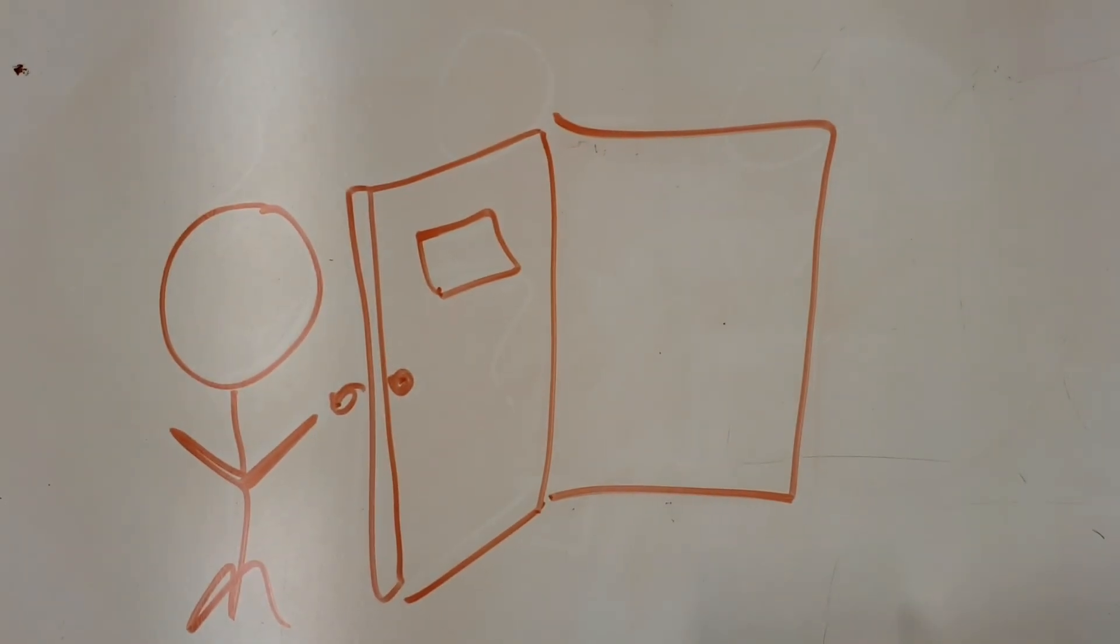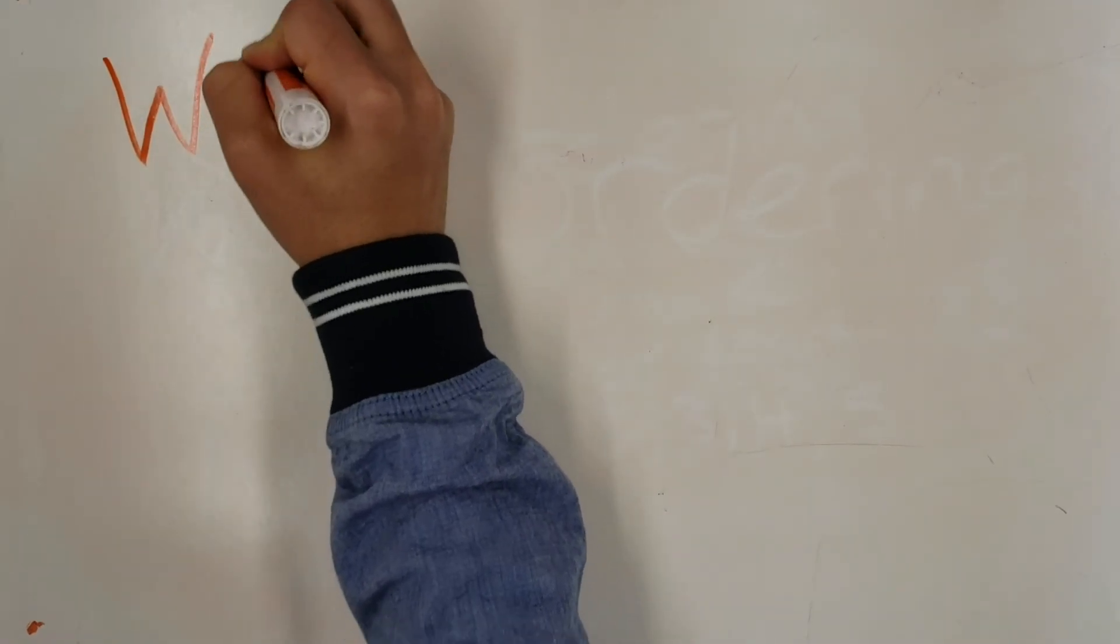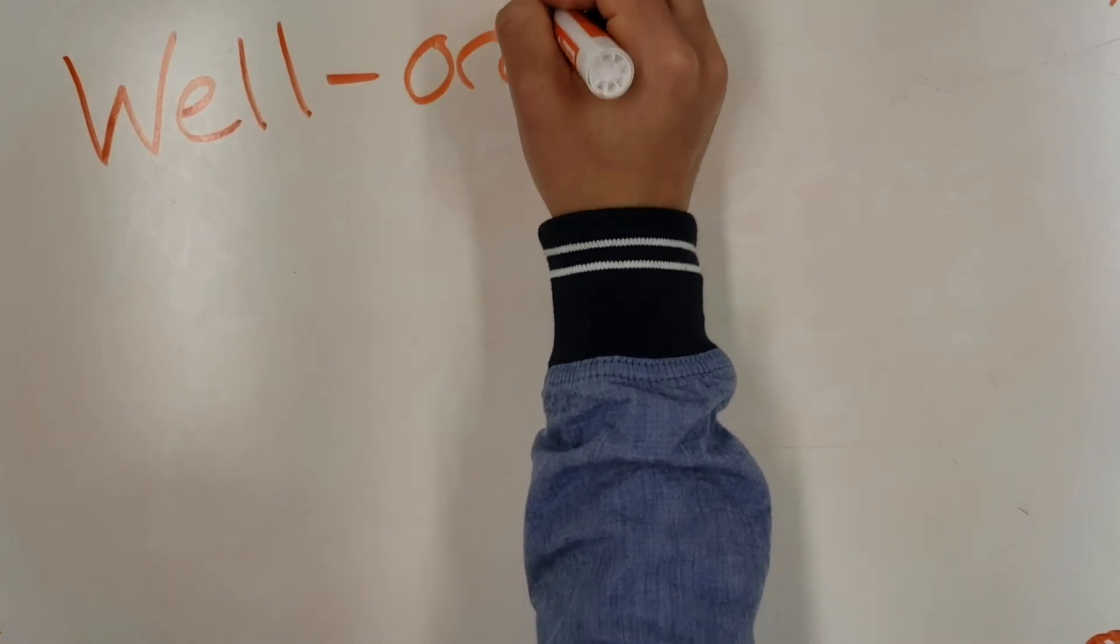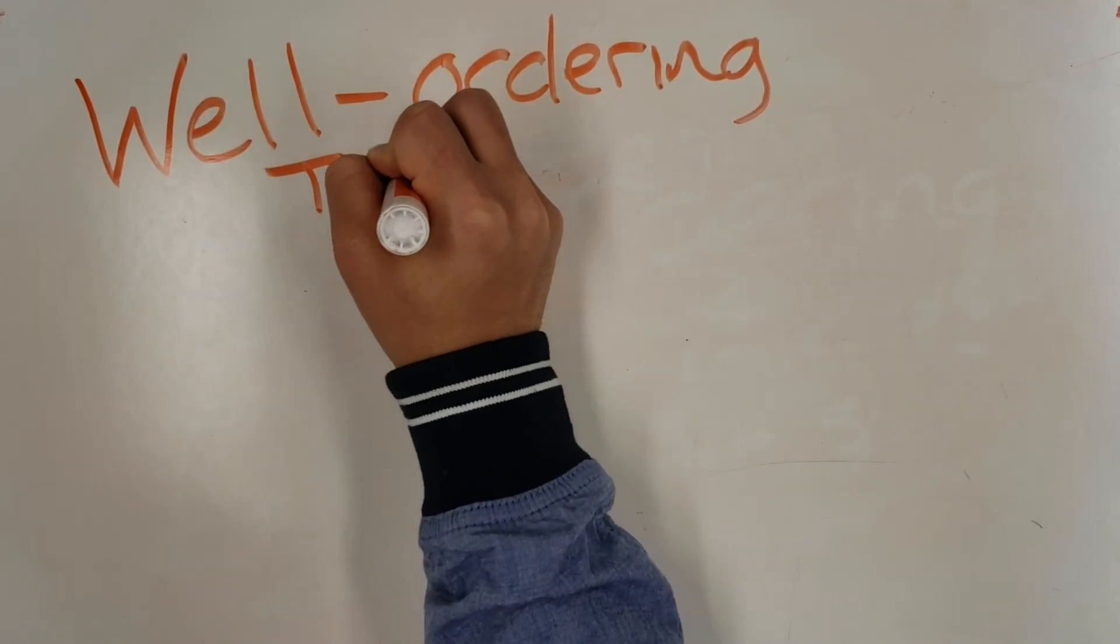In order to understand the theorem we first have to understand what having a well-ordered set even means. Normally sets don't really have any particular order to them; they're just kind of a jumble of objects, whether they be numbers or even M&Ms.